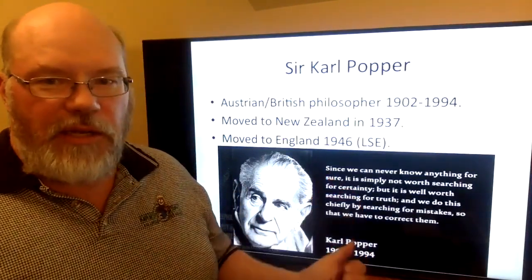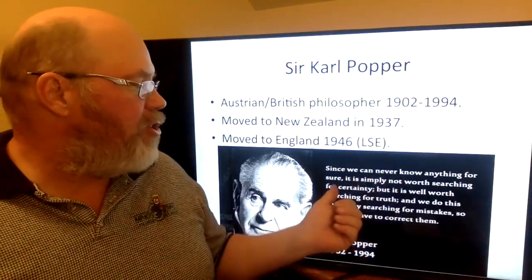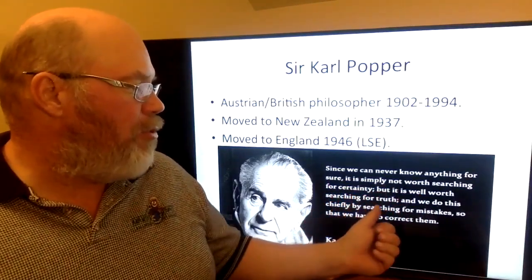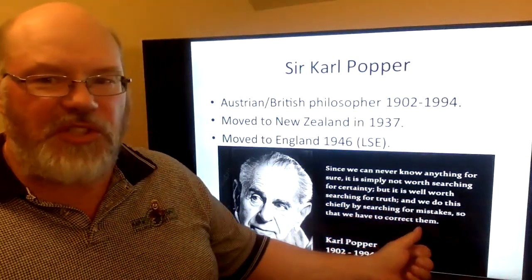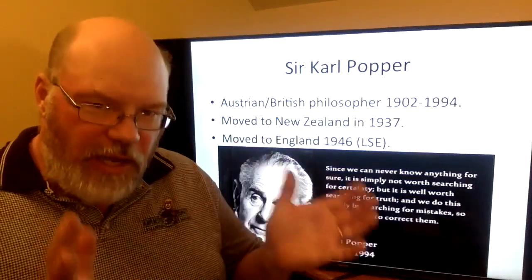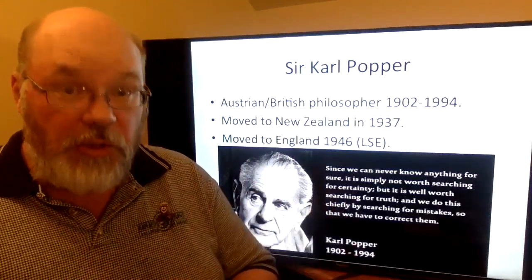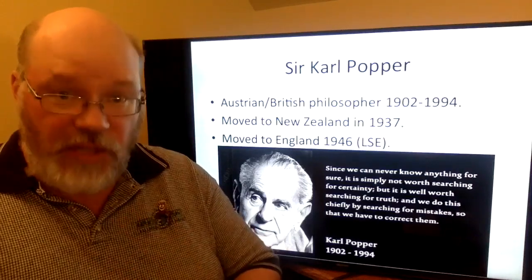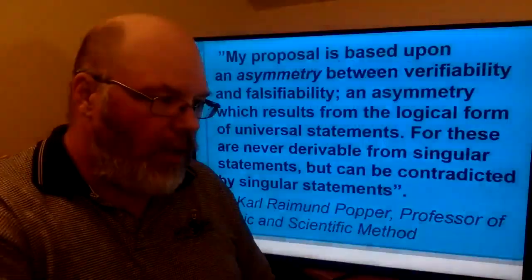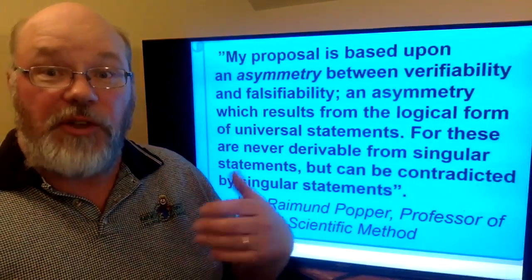Karl was fond of making the pithy quote: 'Since we can never know anything for sure, it is simply not worth searching for certainty, but it is well worth searching for truth, and we do this chiefly by searching for mistakes so that we have to correct them.' So what we're really doing, if we want to be as sure as possible, is to try to get rid of mistakes — try to get rid of things that aren't true. That's the key. And he's got a theory of what he calls falsification.